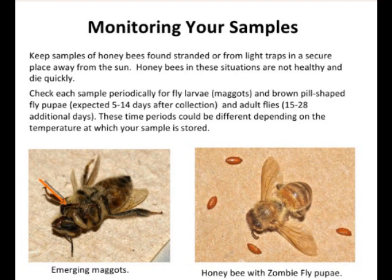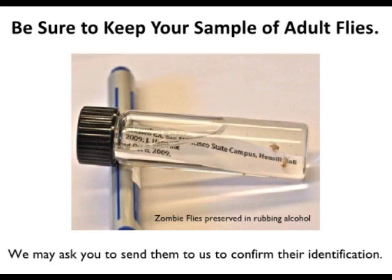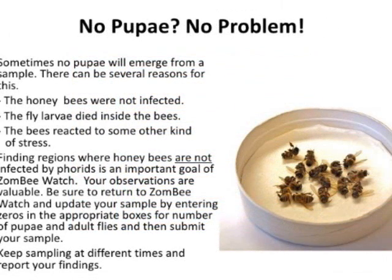Pupae are expected five to fourteen days after collection, and adult flies fifteen to twenty-eight days after collection. These time periods could differ depending on the temperature at which your sample is stored. There is also guidance on how to upload information about your sample. Keep samples of adult flies, as they may ask you to send them in.